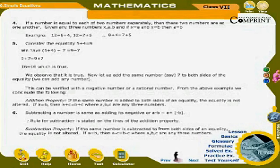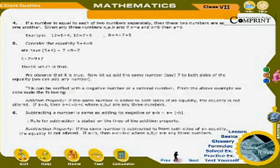Addition property: If a = b, then a + c = b + c, where a, b, c are any three numbers. 6. Subtracting a number is the same as adding its negative: a − b = a + (−b). Therefore, the Subtraction property is stated on the lines of the addition property: if the same number is subtracted from both sides of an equality, the equality is not altered. If a = b, then a − c = b − c, where a, b, c are any three numbers.